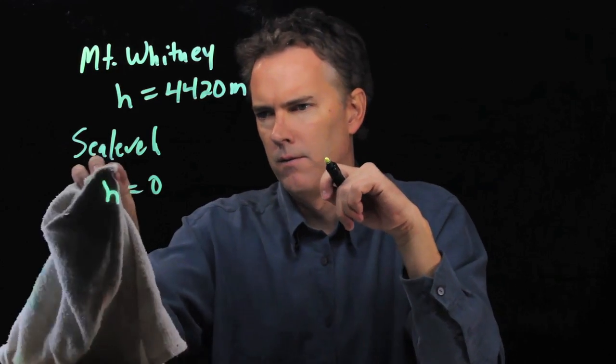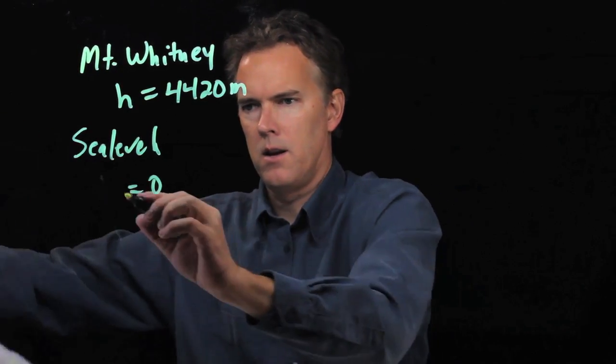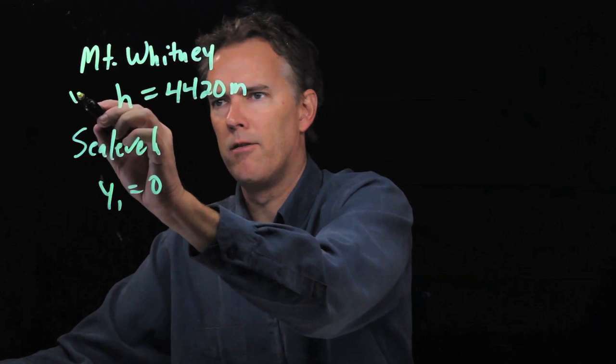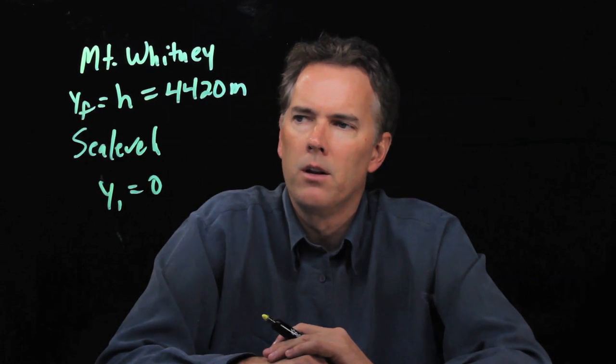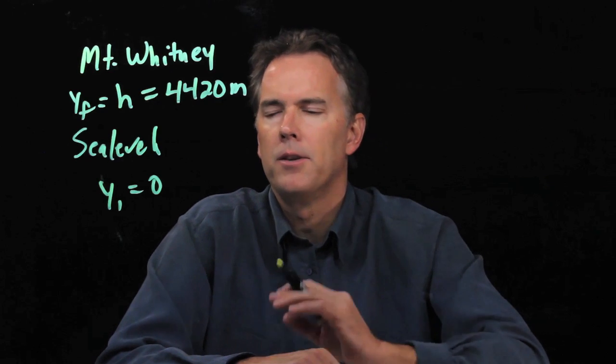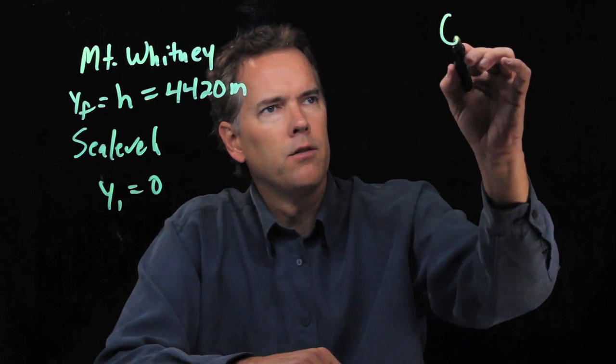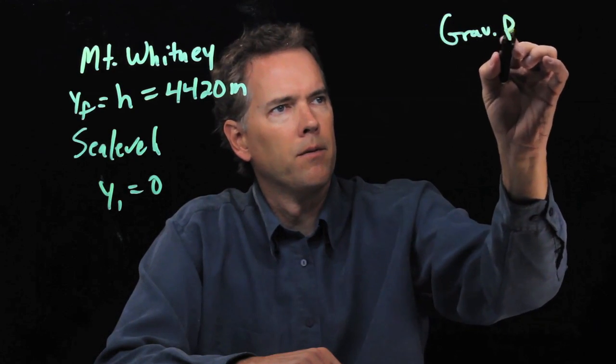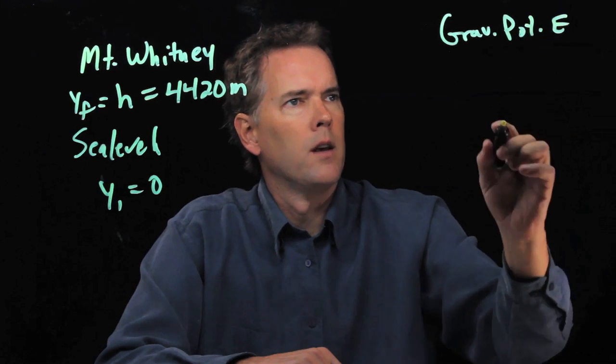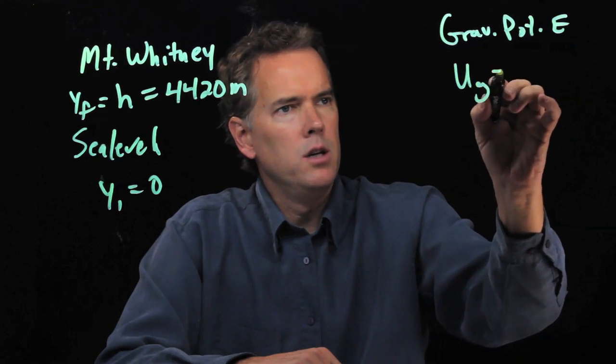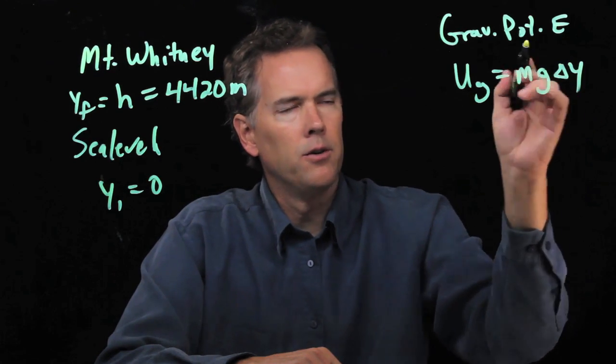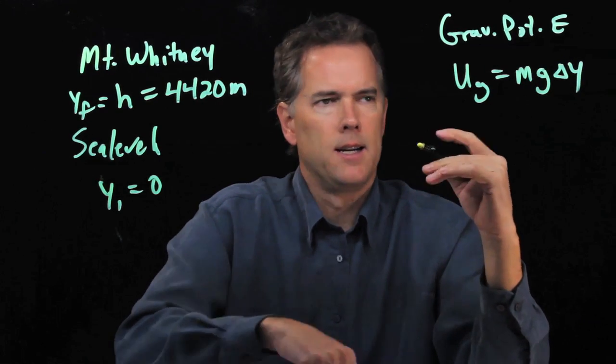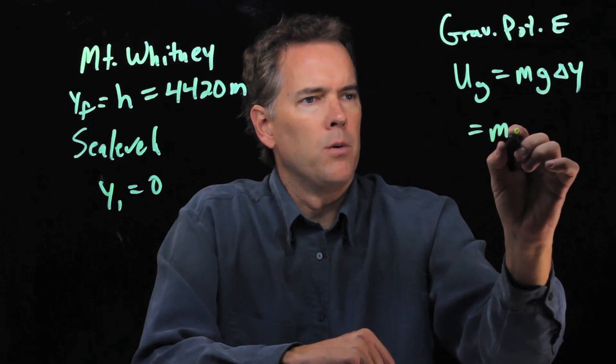Okay, what is gravitational potential energy? Gravitational potential energy is the following: U_g is equal to mg delta y, your change in height.